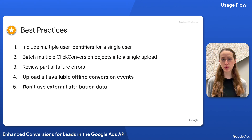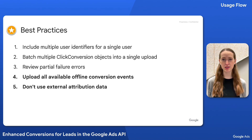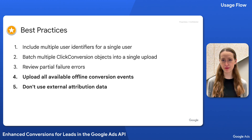Lastly, don't set external attribution data on the click conversion or specify a conversion action that uses an external attribution model. These allow you to specify the portion of a conversion to attribute to Google Ads, but they aren't supported for enhanced conversions for leads. That's it for the enhanced conversions for leads usage flow. I hope you've found this video helpful. Thanks for watching!